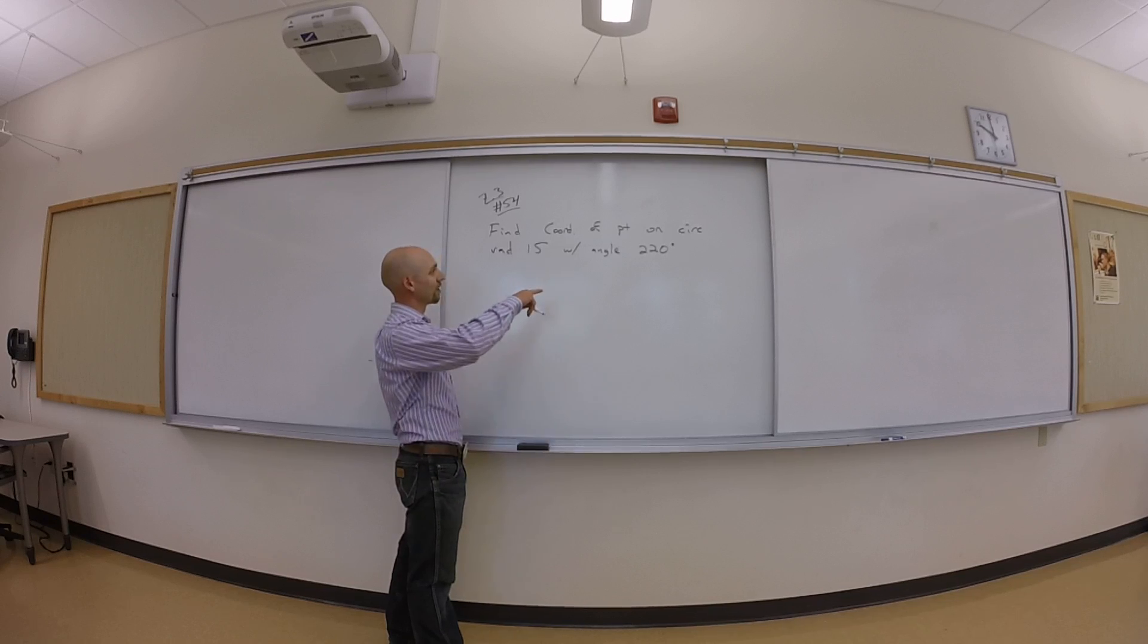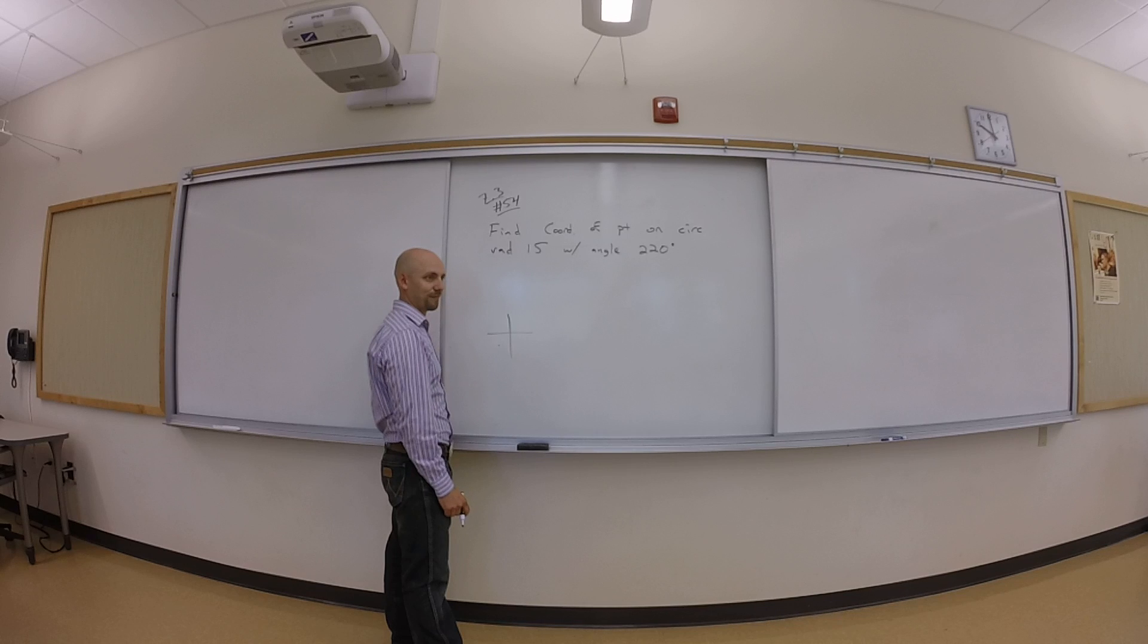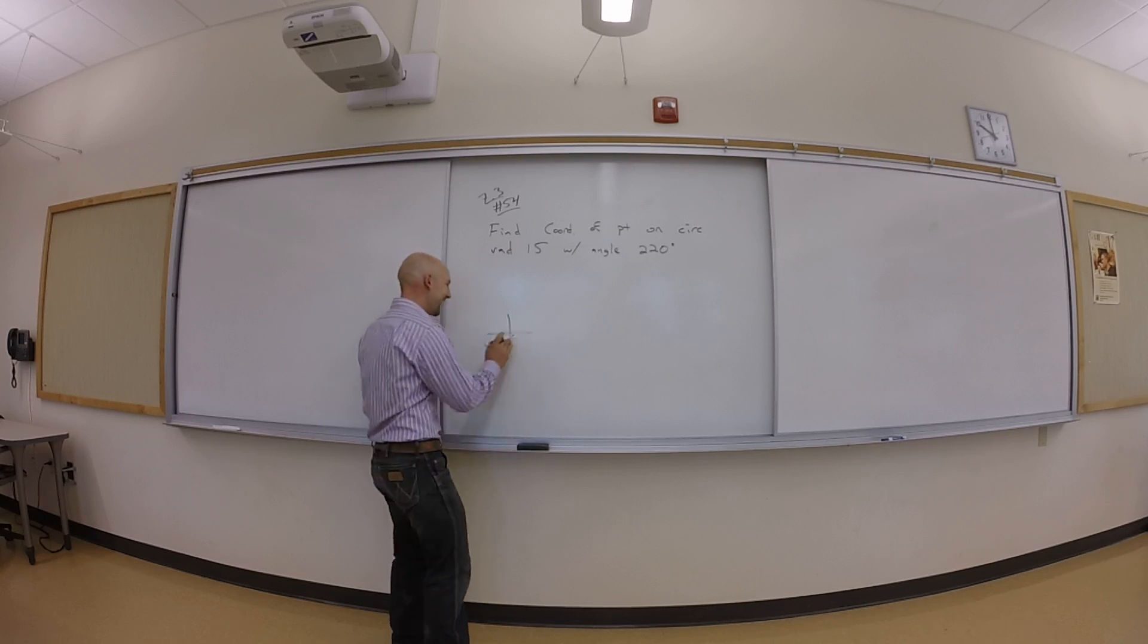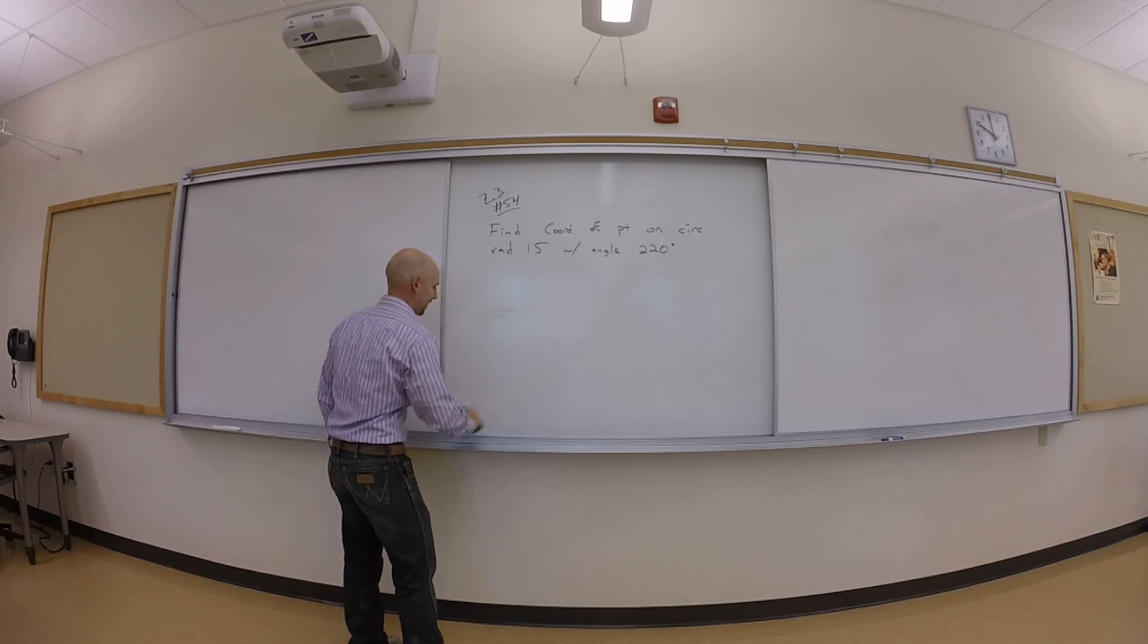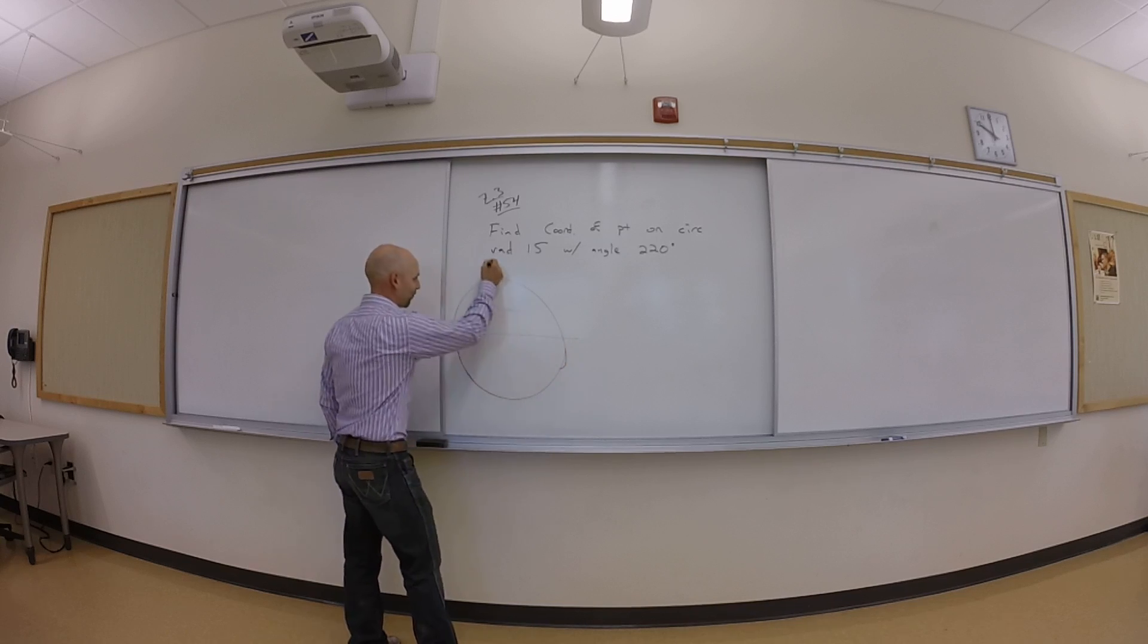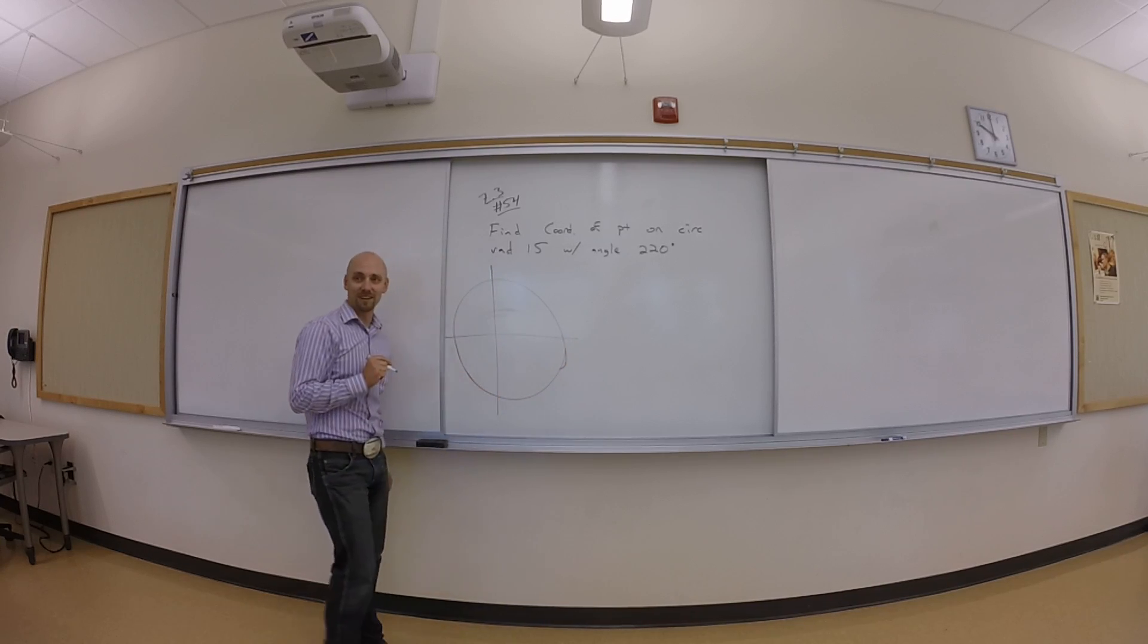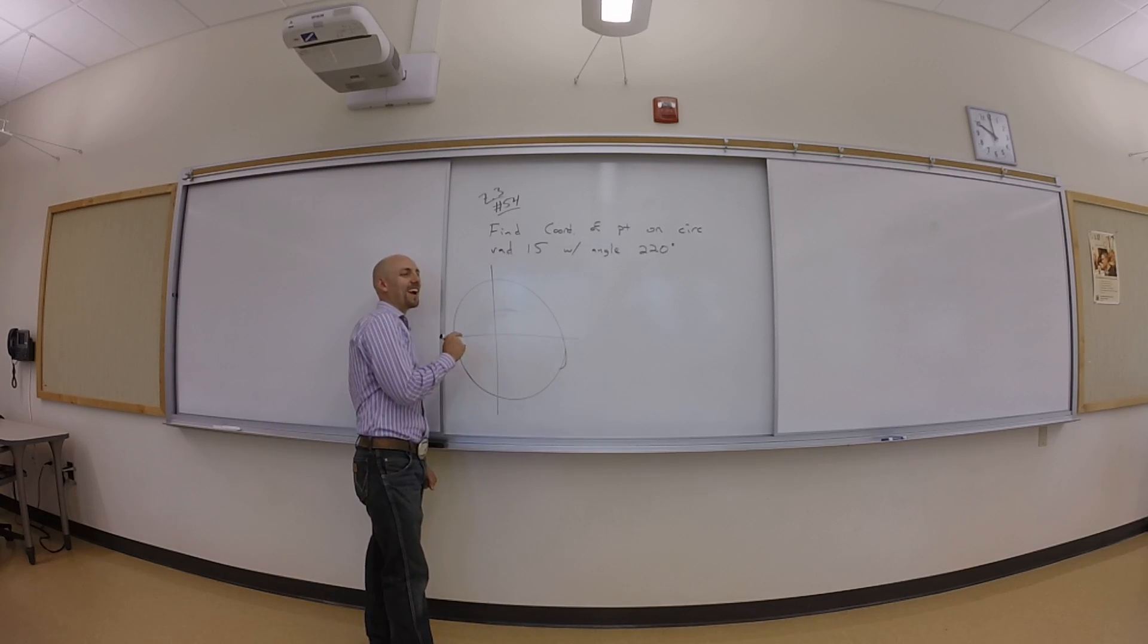Okay. I need something in third quadrant, right? 220. And I need a circle. Let me make this circle bigger. Circle. Wow, that's a really bad circle. It just has to be a good circle. All right. So I want to go to, wait, what? What do I know about the circle?